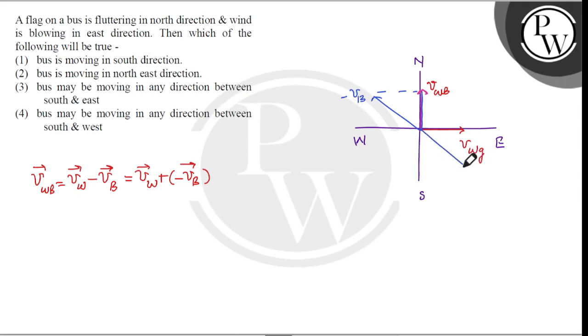This is the direction of velocity of bus with respect to ground. So this is the direction of south-east. The bus may be moving in any direction between south and east. Answer is 3. I hope you understood the solution. Thank you.